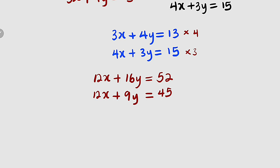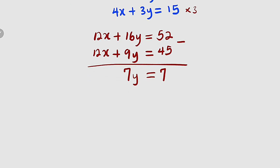So now we can eliminate x by subtraction. x minus x is 0, so it is gone. 16y minus 9y is 7y, so we have 7y here. This is equal to 52 minus 45 is 7. So to find y, we can divide both sides by the coefficient of y, which is 7. So y equal to 7 by 7, y equal to 1.